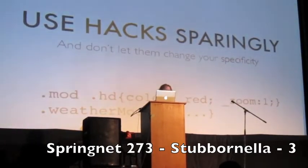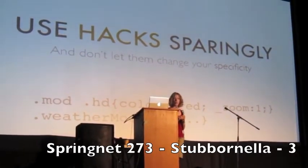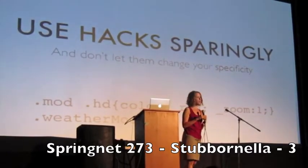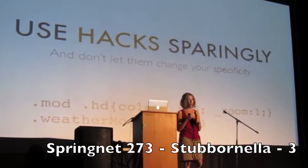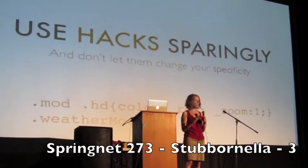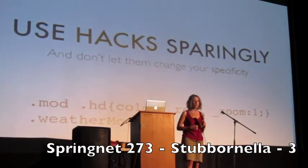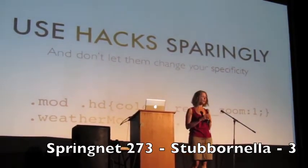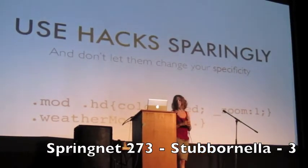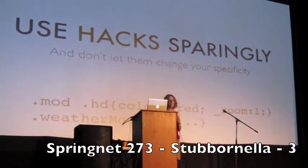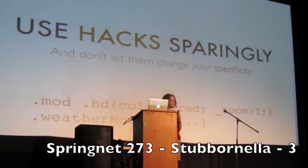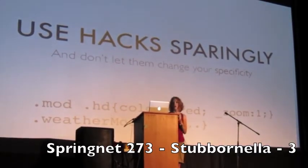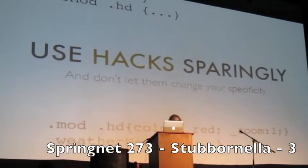Instead of that, you basically want to use underscore or star hacks. They don't screw with specificity. People think it's dirty — maybe it is kind of dirty — but you're supposed to feel a bit uncomfortable putting these things in your code. That's all right. They still keep the specificity the same; they keep that most important part consistent.